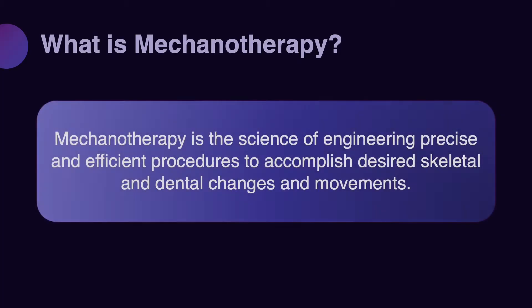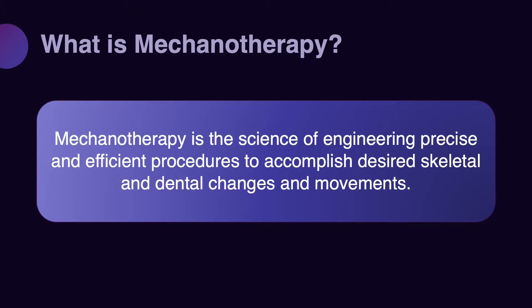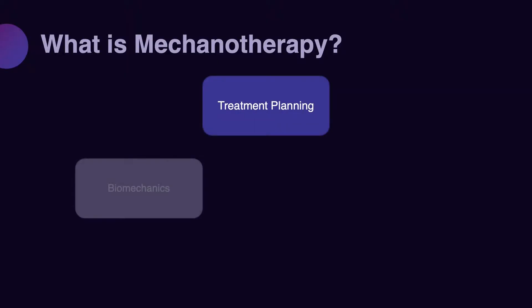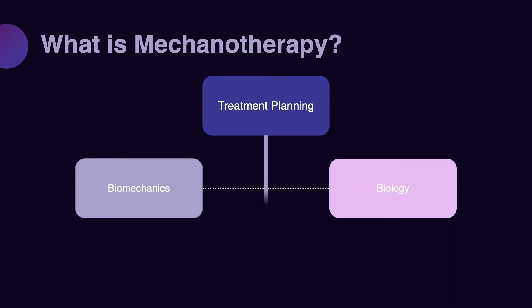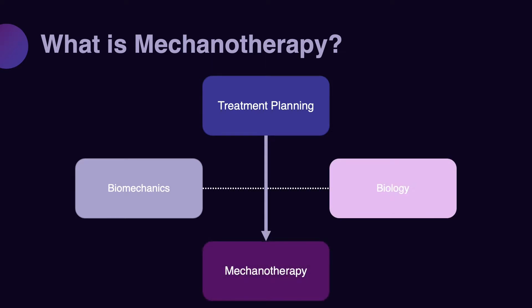Mechanotropy is a science to design the best mechanical solution to solve your mechanical problems. It does not depend on your philosophy. It does not depend on your school of training. It follows the rules of physics and biology. That's different from biomechanics, which is the science of mechanics, physics, and the biological response to mechanical stimulation that you need to know if you want to design proper mechanotropy.